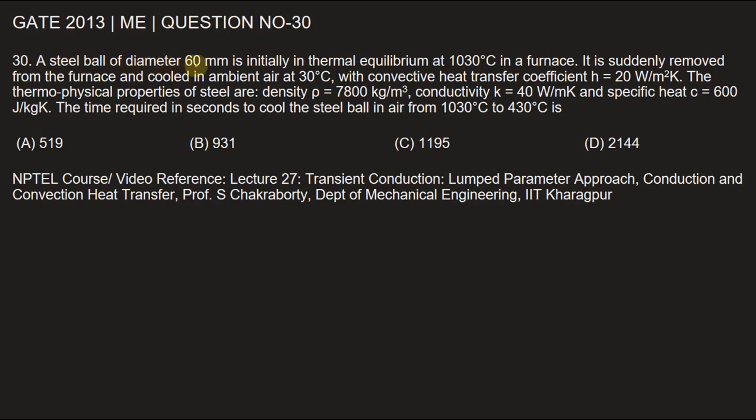The question is: a steel ball of diameter 60 millimeter is initially in thermal equilibrium at 1030 degrees Celsius in a furnace. It is suddenly removed from the furnace and cooled in ambient air at 30 degrees Celsius. The convective heat transfer coefficient h is equal to 20 watt per meter square Kelvin.